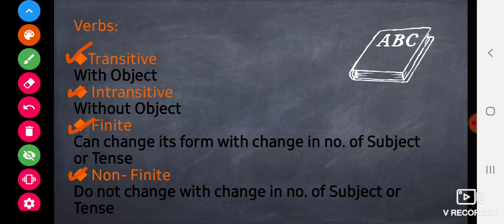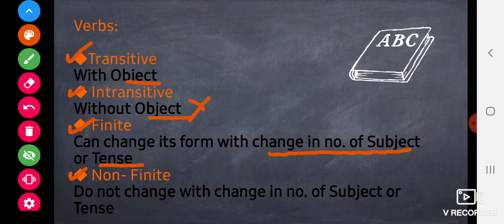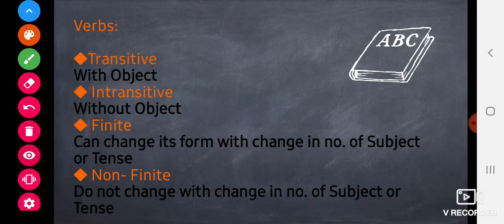Transitive verbs have an object with them. Intransitive verbs do not have an object. Finite verbs can change their form with a change in the number of subject or tenses. Non-finite verbs do not change with the change in number of subject or tenses.